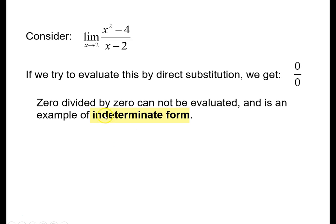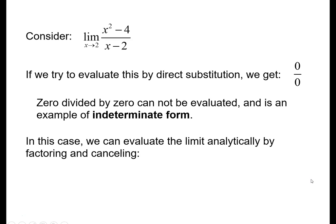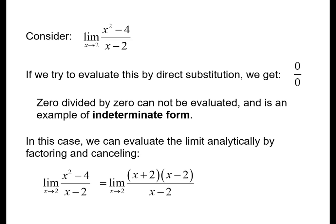Getting 0 over 0 is called an indeterminate form, and there are a few different types we'll talk about. Back in Calc 1, we would have evaluated this limit by crossing out the x minus 2 terms and then using direct substitution, giving us 4 as the limit.